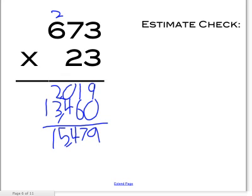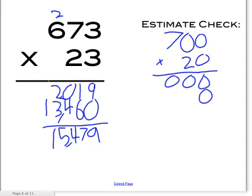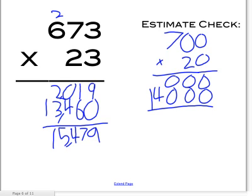Then if you do the estimate check, you round 673 to the nearest 100, so you put 700, and then you round 23 to the nearest 10, which is 20. So you do 700 times 20. 0 times 0 equals 0, 0 times 0 equals 0, 0 times 7 equals 0. And you put a 0 here to replace that place value. Then 2 times 0 equals 0, 2 times 0 equals 0, 2 times 7 equals 14. You put 14 at the very end because there's no place to carry it.